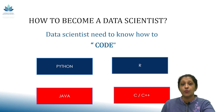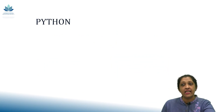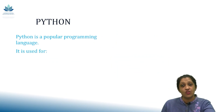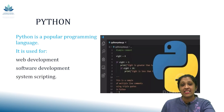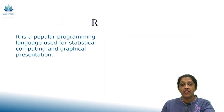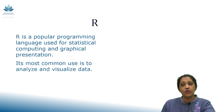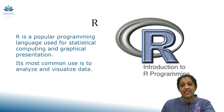Those who want to become a data scientist should have basic knowledge of all these programming languages. Python is a popular programming language used for web development, software development, and system scripting. R is a popular programming language used for statistical computing and graphical presentation, and its most common use is to analyze and visualize data.